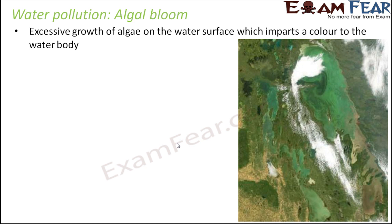The cause of algal bloom is an excess of nutrients — specifically excess phosphates due to excess use of fertilizers on agricultural land. Just to increase crop productivity, too much fertilizer is applied to the field. During rains, these excess fertilizers get washed away and discharged into the nearby water body. When they reach the river, they contain a lot of phosphates or nitrates, and all these excess nutrients favor the growth of a lot of algae.